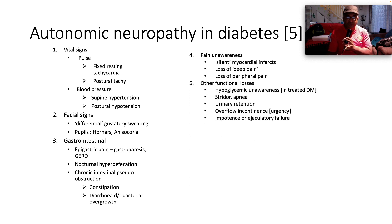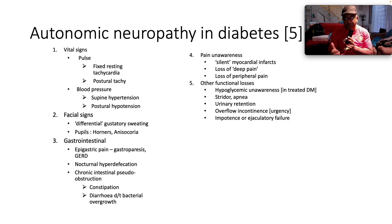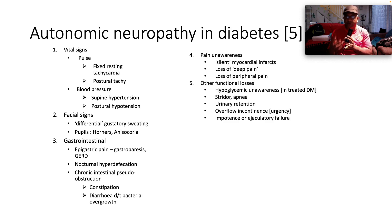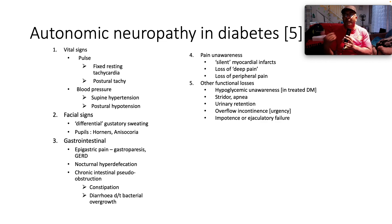Other functional losses in the context of autonomic neuropathy include hypoglycemic unawareness, especially in patients who are treated for diabetes; stridor and apnea; urinary retention; overflow incontinence, which is otherwise known as urgency. And then, of course, one of the more common complications is impotence, ejaculatory failure, or retrograde ejaculation.